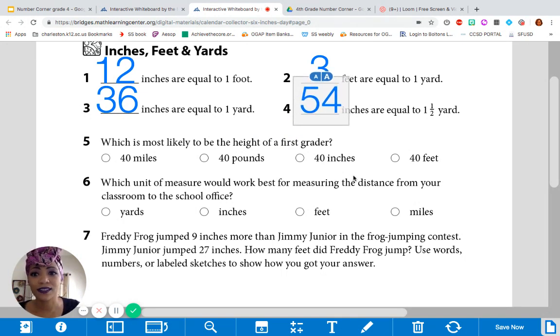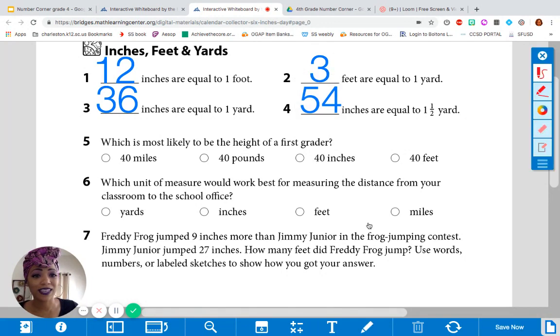Alright. Look at number 5 and choose your answer. Which is most likely to be the height of a first grader. Good. That's exactly what I was thinking. Definitely not 40 feet. Miss Tramell is only 5 feet, 1 inch. So, they can't be 40 feet. They'd have to be at least 40 inches. And since it says height, we couldn't have chosen pounds, because that's weight. And then miles is a distance. So, 40 inches makes the most sense.